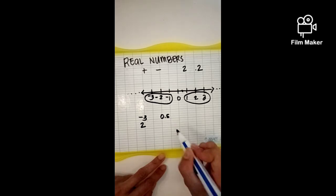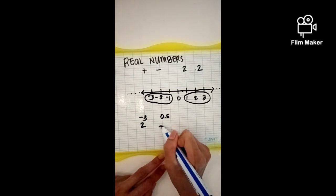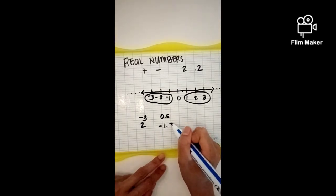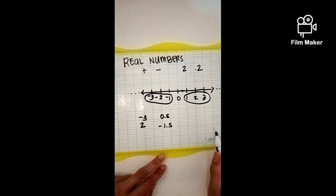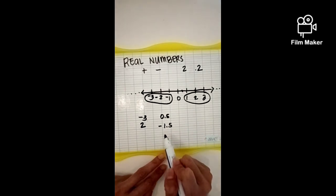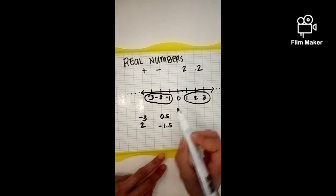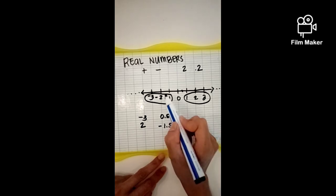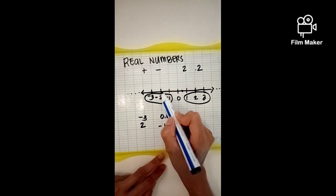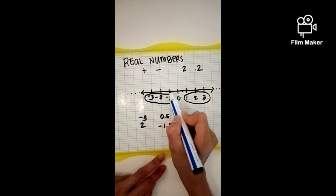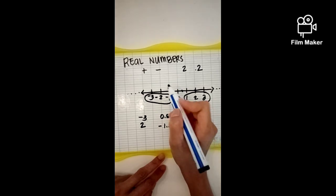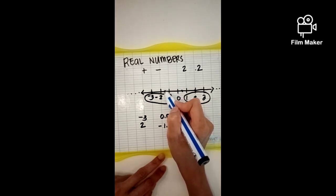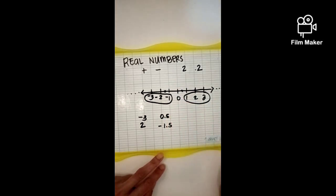How about negative one point five? Yes. You can consider this also as a real number, because negative one point five — you can find it in between negative two and negative one. And it's on the number line.